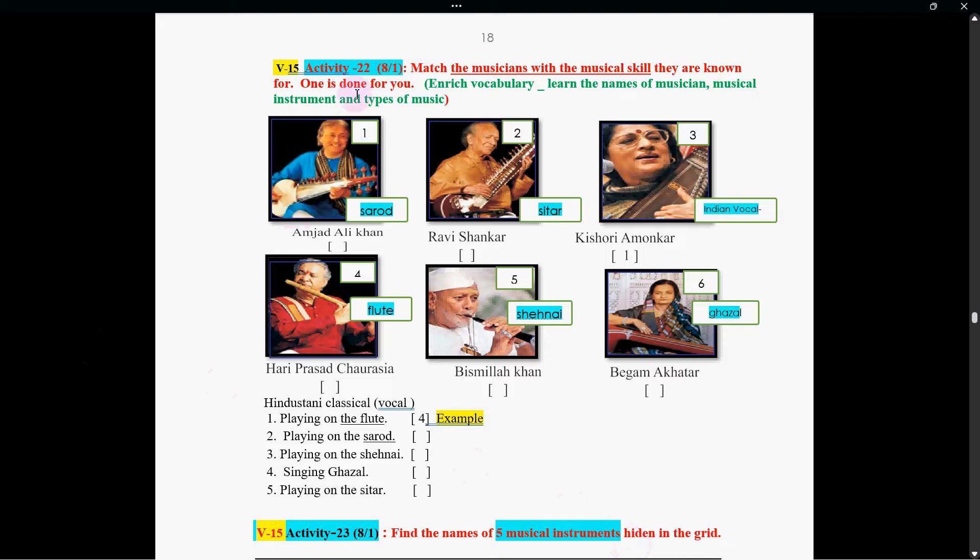Now activity number 21. In this activity, our task is to match the musician with the musical skill or musical instruments they are known for. One is done for you.